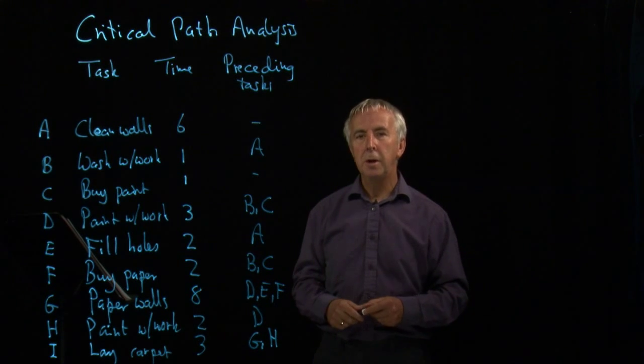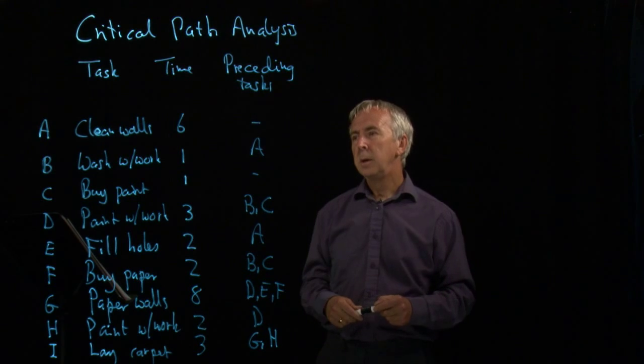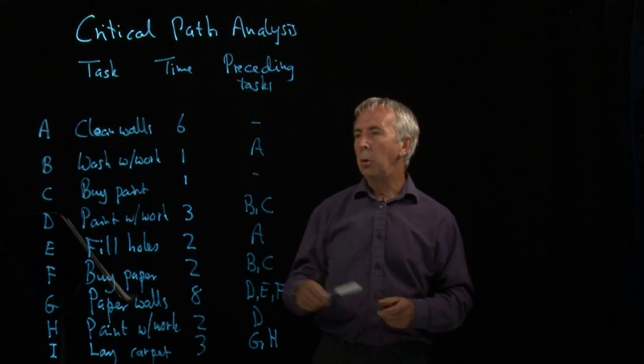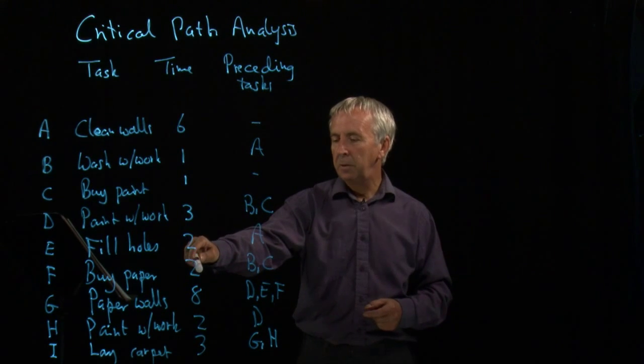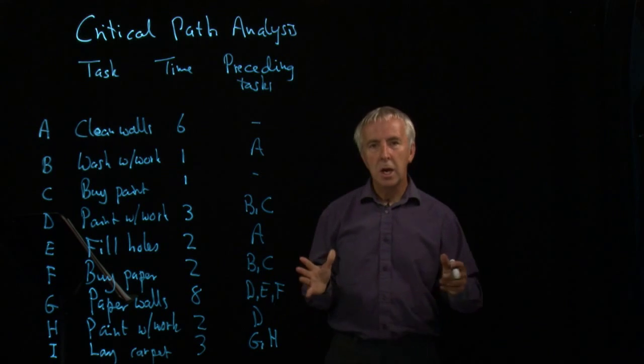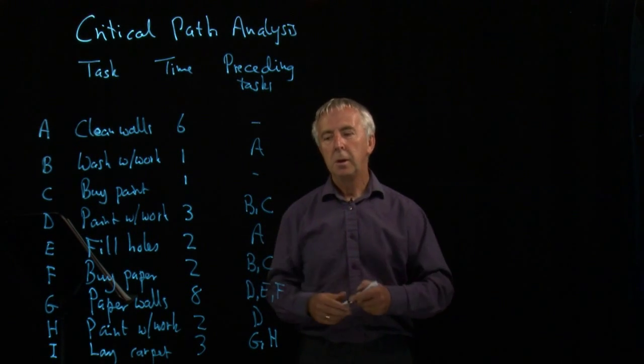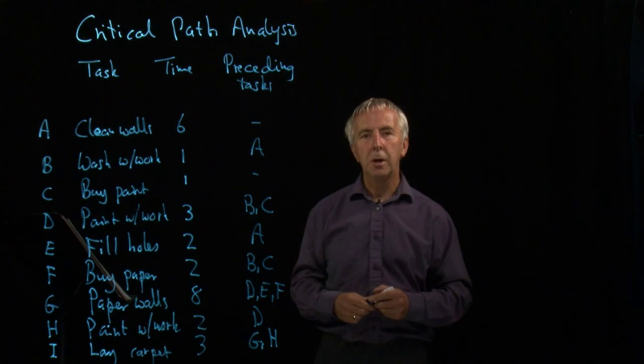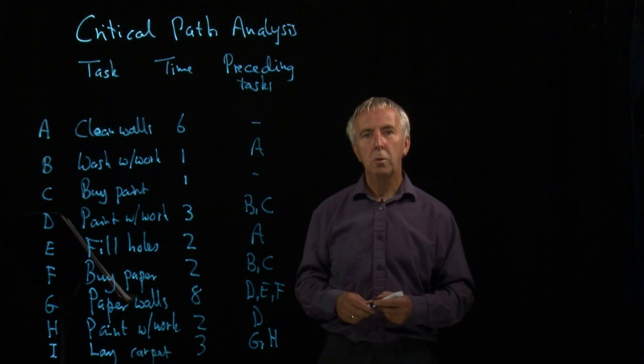Some of which can be done at the same time as others, if we have enough people. We might simply add up all the time. So we get 8, 11, 15, 25, 28. So the whole thing is 28 hours of labour. But if we've got more than one person, people can be doing some of these tasks at different times. And we should be able to actually finish it in shorter than 28 hours.